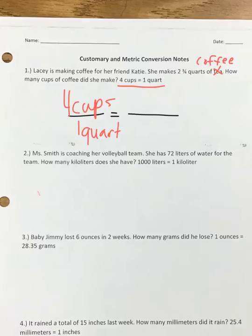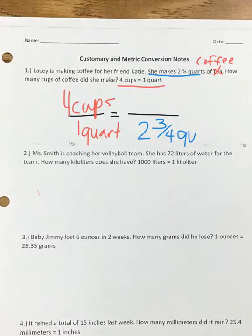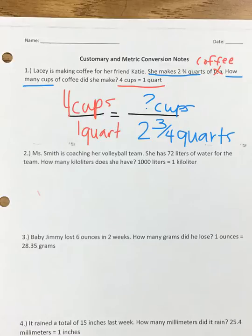Four cups is one quart. The second step is to fill in what they give you. It says she makes two and three-fourths quarts, so since quarts is on the bottom we write two and three-fourths quarts on the bottom. The cups is what is unknown right now. Once you've set up your proportion, you solve it exactly like we've been solving before.